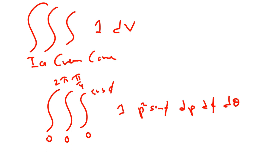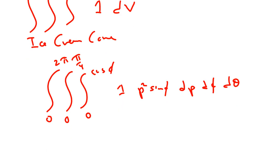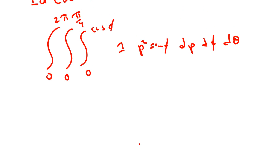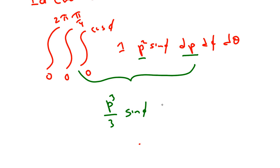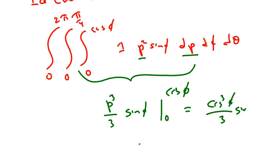Let's start computing. The innermost integral is with respect to rho. We have rho squared, so we get rho cubed over 3 times sine phi, evaluated from 0 to cosine phi. Plugging in, we get cosine cubed phi over 3 times sine phi. Plugging in 0 gives just 0, so it's minus 0. That's pretty nice.